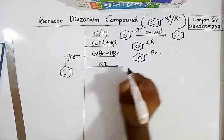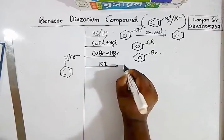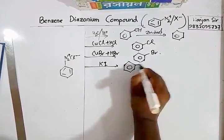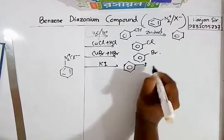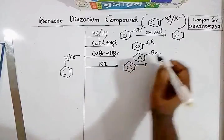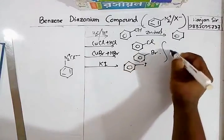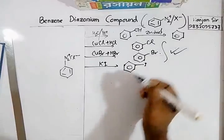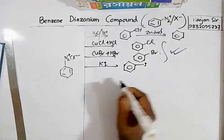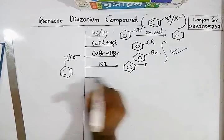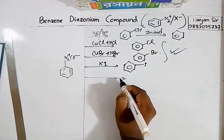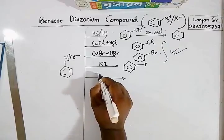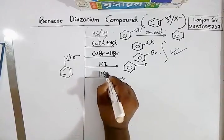You can also get iodobenzene by adding KI solution to benzene diazonium chloride. These reactions — giving chlorobenzene, bromobenzene, and iodobenzene — are called Sandmeyer reactions.